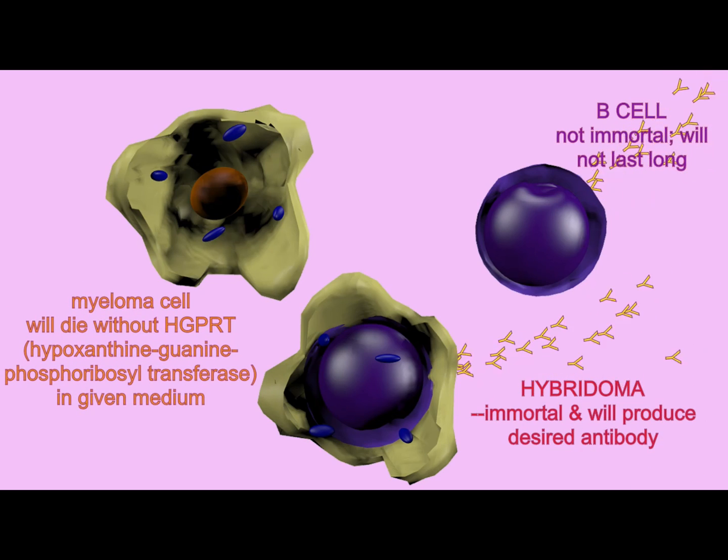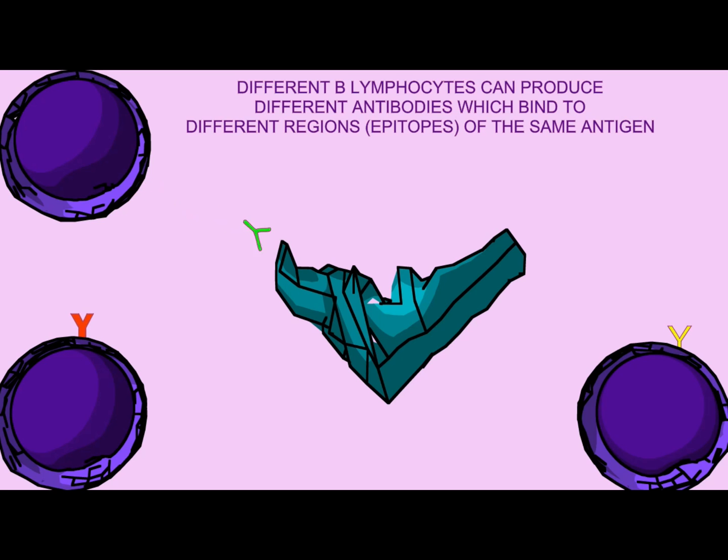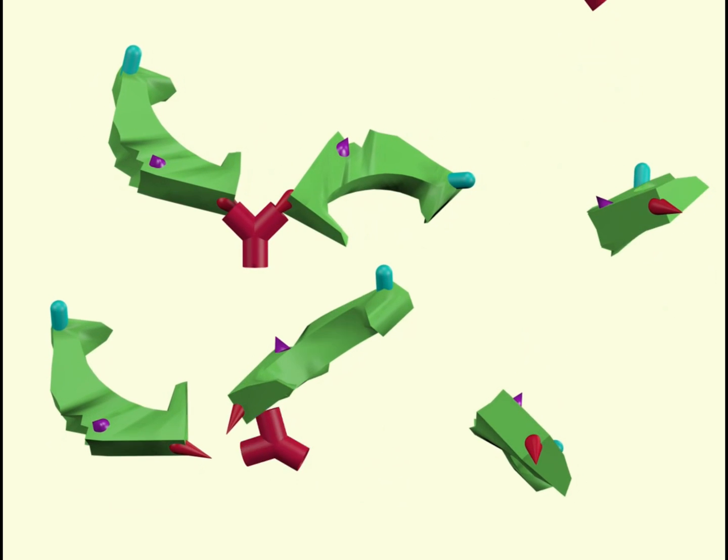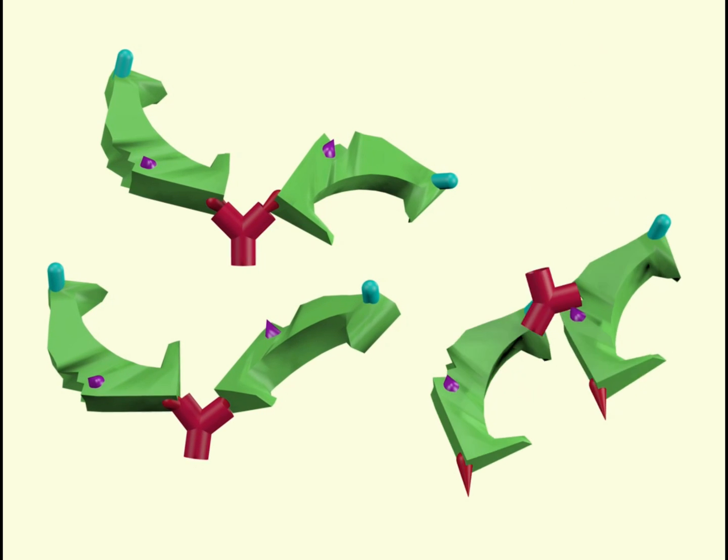Because monoclonal antibodies all come from the same cell line and bind to the same epitope, each antibody molecule will typically bind to a maximum of two antigens.